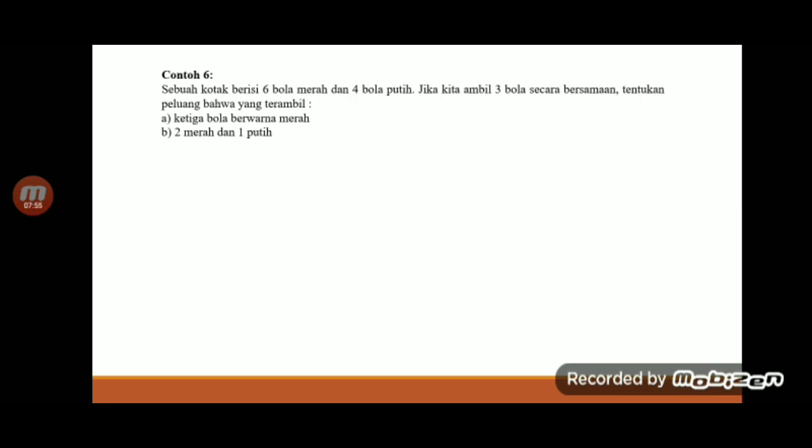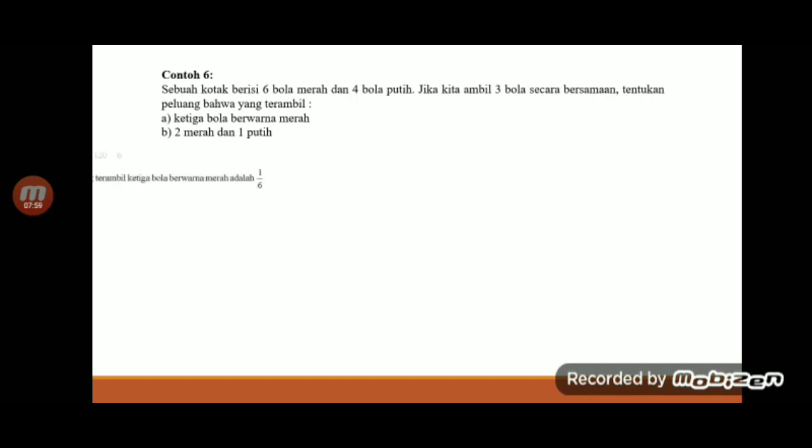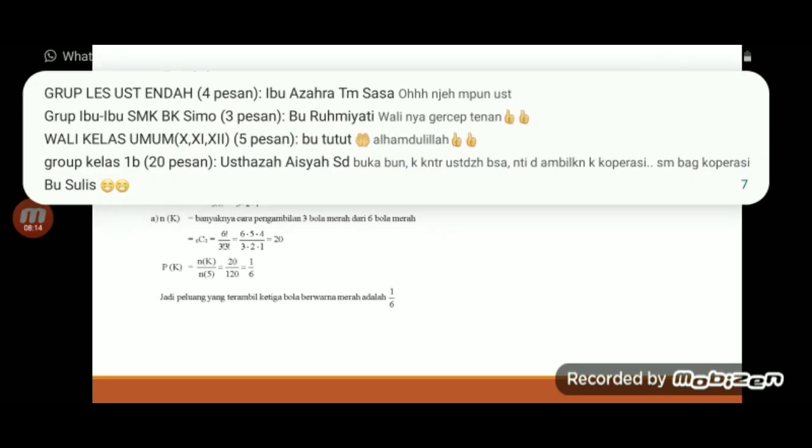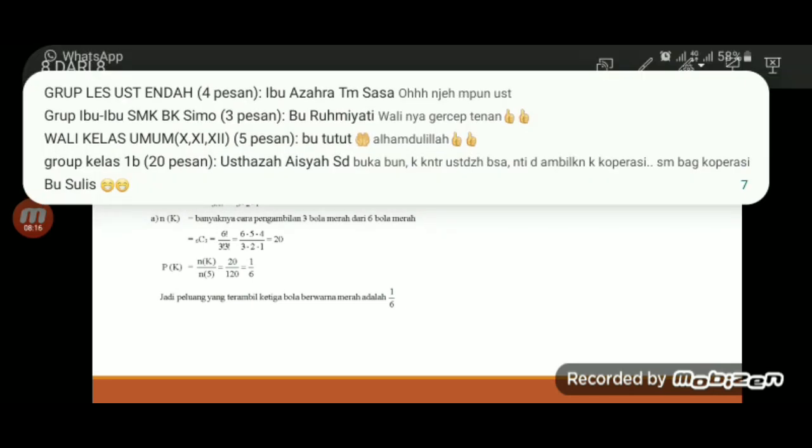Disini nanti untuk menyelesaikan, berarti kita kerjakan dengan cara menggunakan kombinasi. Kita cari dulu untuk mencari ruang sampelnya. Ruang sampelnya berarti jumlah bolanya ada 10. Disini yang diambil 3, berarti kombinasi 10,3 itu sama dengan 120.